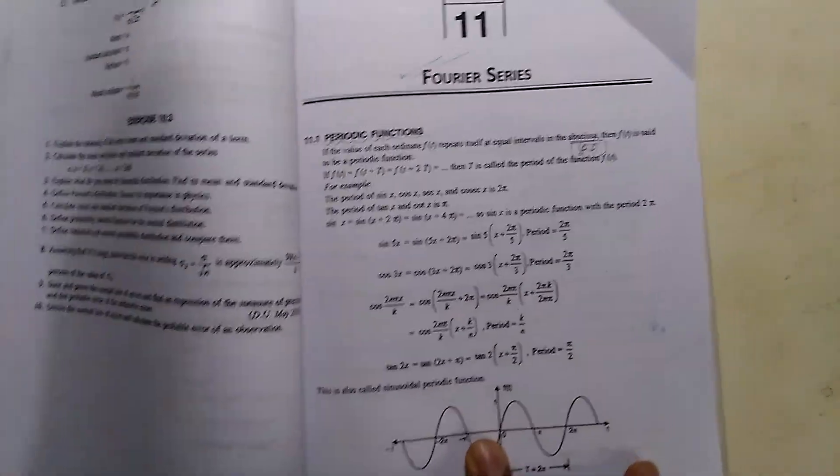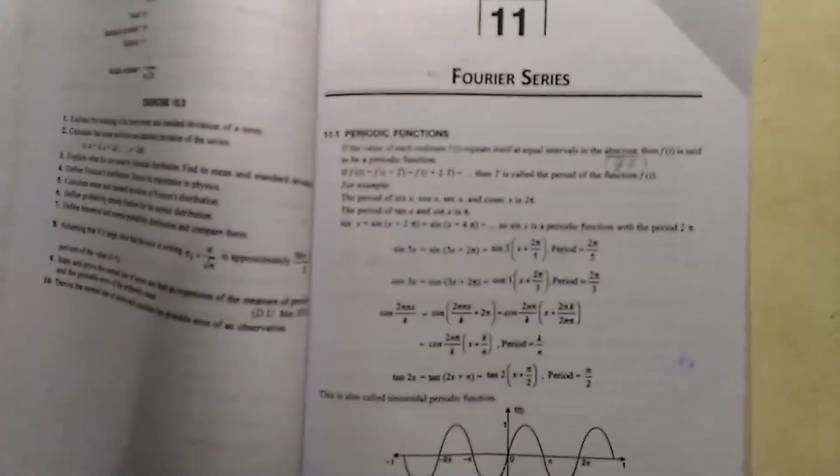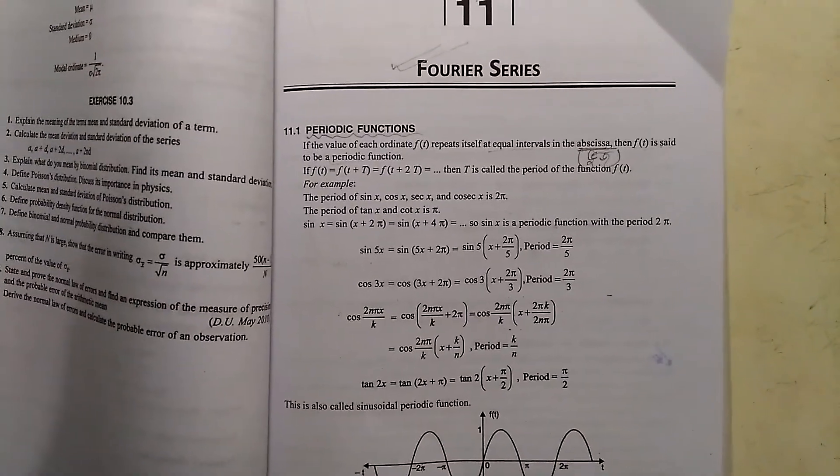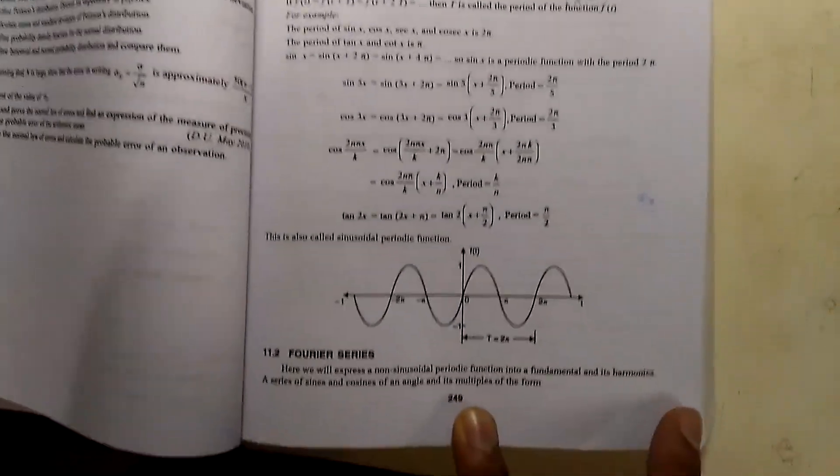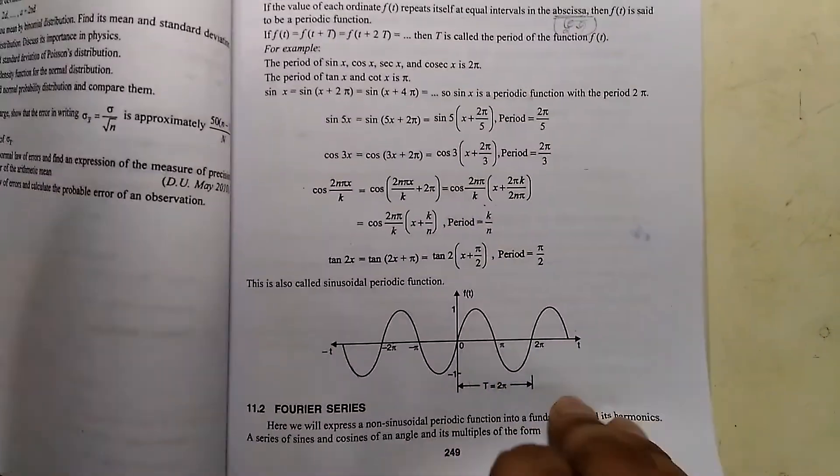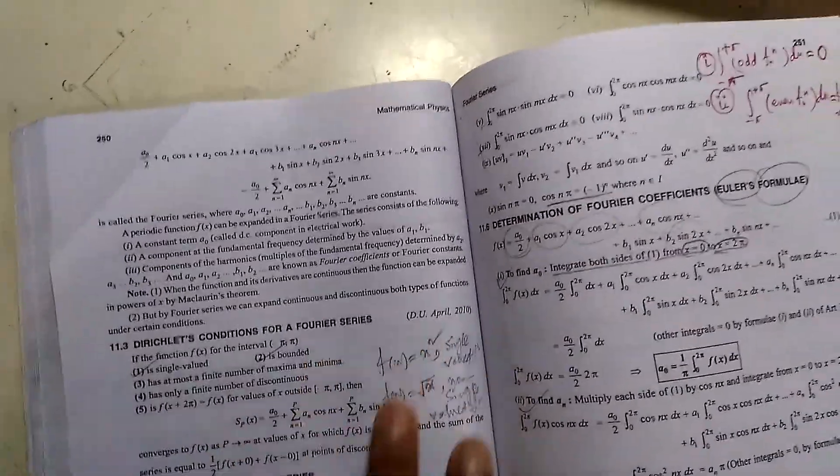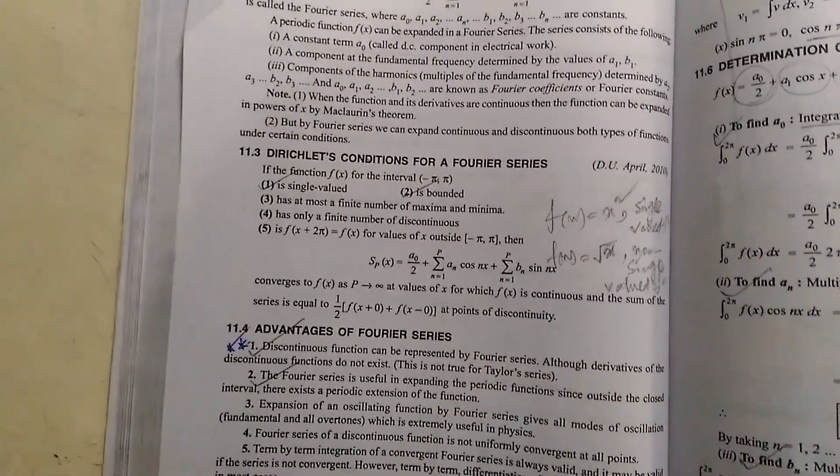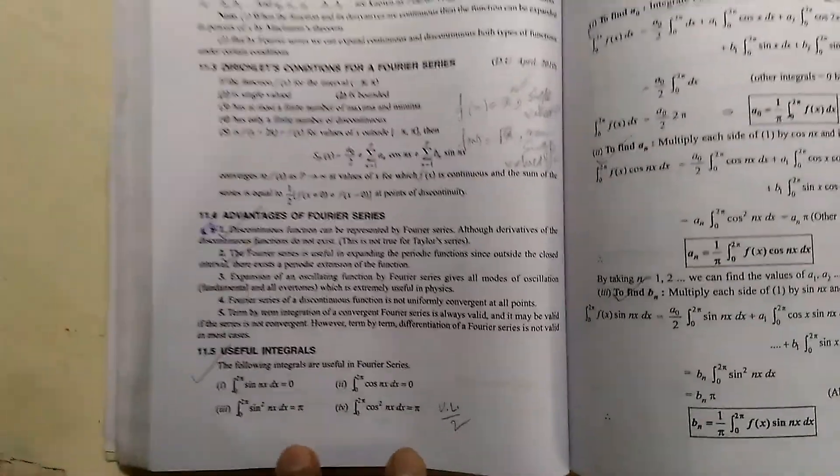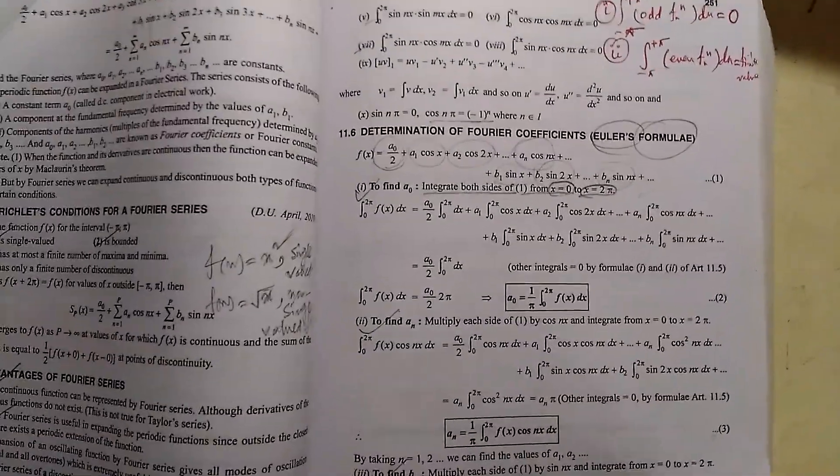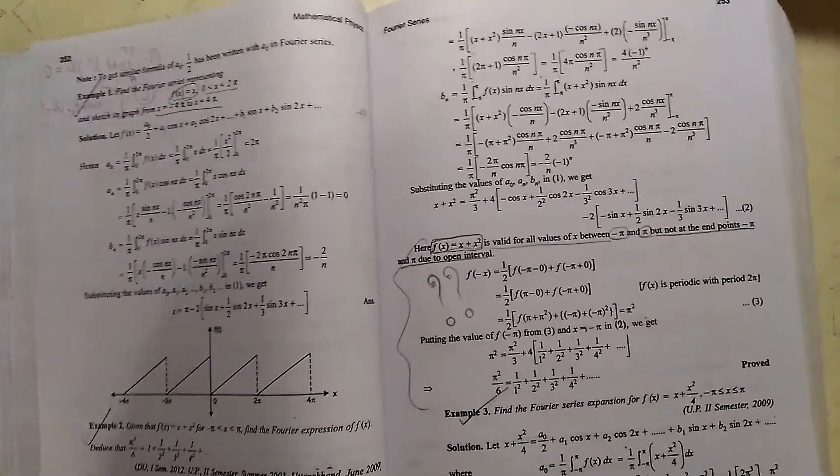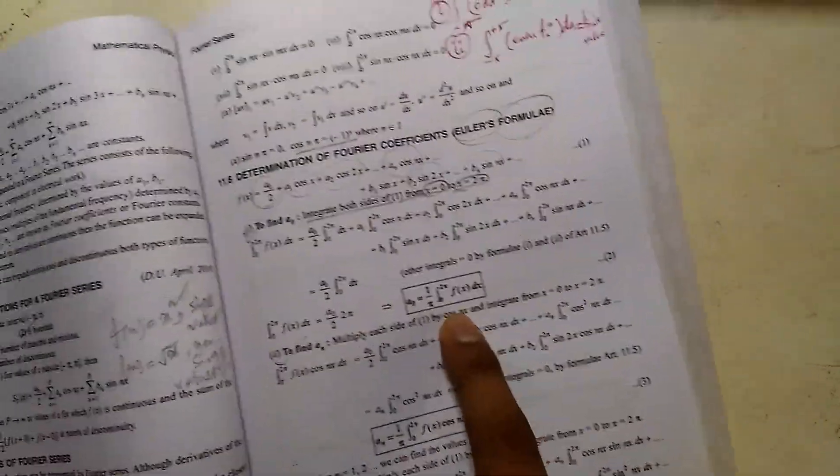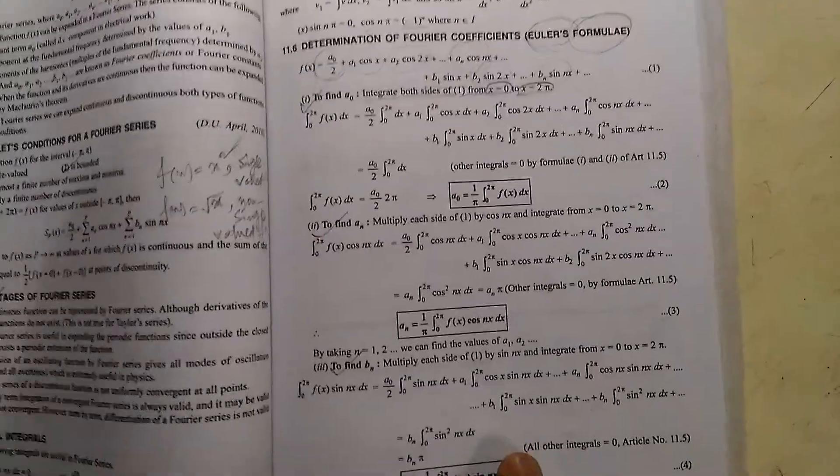I am going to show you some of the chapters of this book. I'm going to show you the Fourier series. As you can see, the first introduction of this chapter is periodic functions, then there is a graph and then Fourier series definition of it, then the conditions Dirichlet condition for a Fourier series, advantages of Fourier series, useful integrals, all you need to know is given here. And then the expression of a naught, then an and bn is also given here.